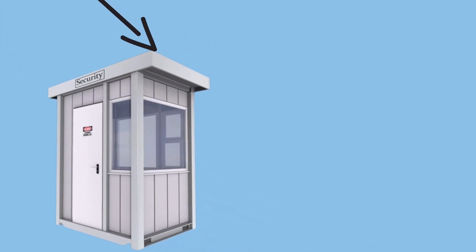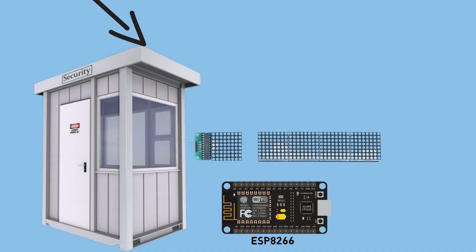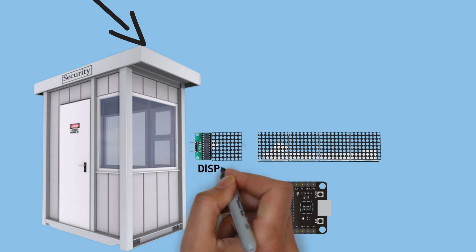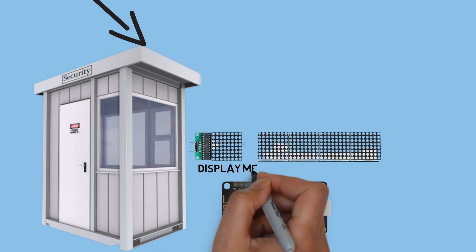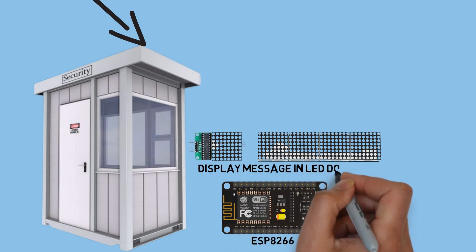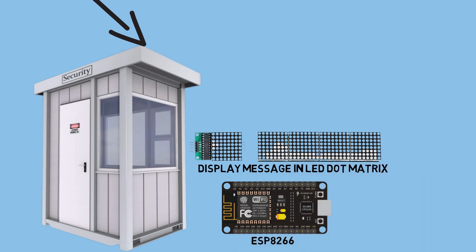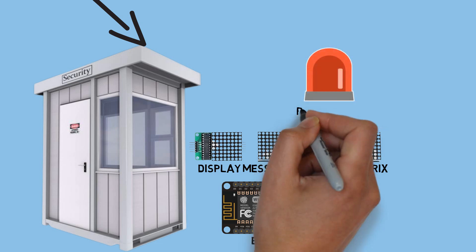The device placed at the security post is an ESP8266 connected to the internet network via Wi-Fi. The ESP will receive the MQTT message sent from the Android app, then display the message on a LED dot matrix. It will also activate a rotary lamp as an attention signal indicating that an SOS message has been received and needs immediate attention.